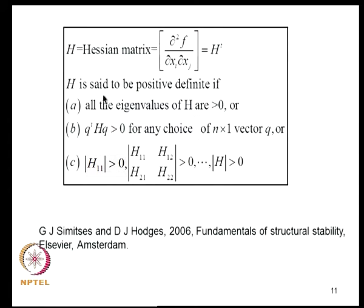The Hessian matrix is positive definite if all eigenvalues of H are greater than zero, or Q^T H Q > 0 for any N×1 vector Q. Equivalently, H11 > 0, the 2×2 determinant |H11 H12; H21 H22| > 0, and so on, with the determinant of H itself being greater than zero.